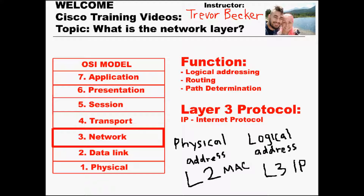IP routing, or just routing for short, is the process of forwarding IP packets. As a network rule, if two hosts are in the same network, they are able to communicate to each other freely, and this is without the need for routing.